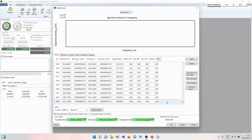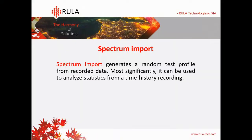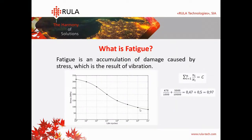To compare the results, let's continue with the fatigue damage spectrum test. Going back to our presentation. Our first step is to talk about fatigue. Fatigue is accumulation of damage caused by stress, which is the result of vibration. Here you can see the graph which represents a stress-to-cycles curve. All the calculations of fatigue are made with the Palmgren-Miner rule.